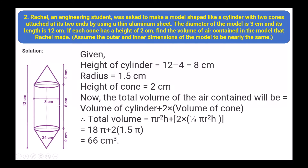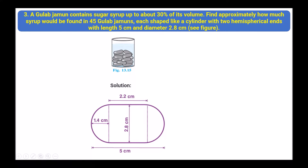The cylindrical part height is 8 centimeter. Find the volume of air contained in the model. Assume outer and inner dimensions to be nearly the same. Height of cylinder = 12 − 4 = 8 cm, radius = 1.5 cm, height of each cone = 2 cm. Total volume equals volume of cylinder plus 2 times volume of cone, giving 66 centimeter cube.